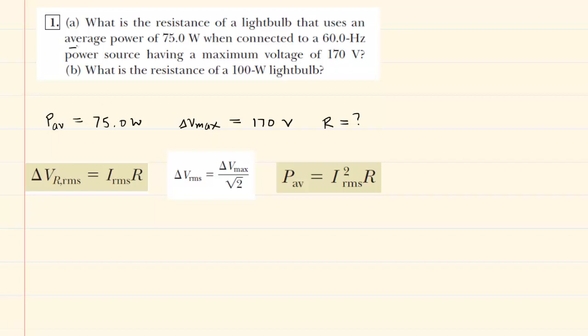We've begun this question by listing out the two important known values. We have the average power of 75 watts and then the maximum voltage of 170 volts. We've listed those two quantities right here. We're looking for the resistance.